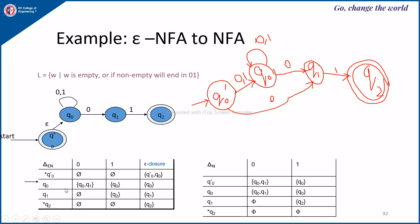Similarly on 1: epsilon closure of Q0-dash is {Q0-dash, Q0}. For each of these states, take the transition on 1 — it is phi and Q0. Epsilon closure of Q0 is Q0, so Q0-dash on 1 goes to Q0 only. For Q0: first find epsilon closure of Q0 which is Q0. Then for Q0 on 0, the next state is {Q0, Q1}. Take the epsilon closure of {Q0, Q1} which is {Q0, Q1}. Therefore, Q0 on 0 goes to {Q0, Q1}. Similarly, apply the same for the other states and you will get the equivalent NFA machine.